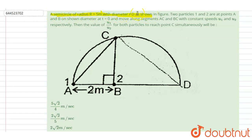5 meters with diameter AD as shown in the figure. Particle 1 and 2 are at A and B as shown on the diameter. At t equals 0, they move along the segments AC and BC with speed u1 and u2 respectively.